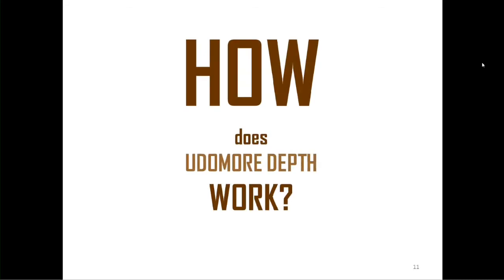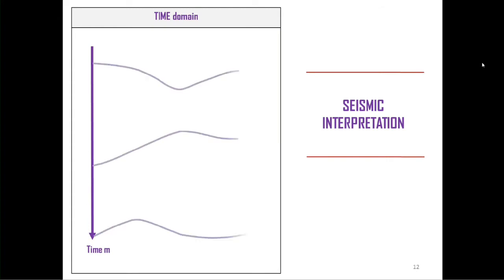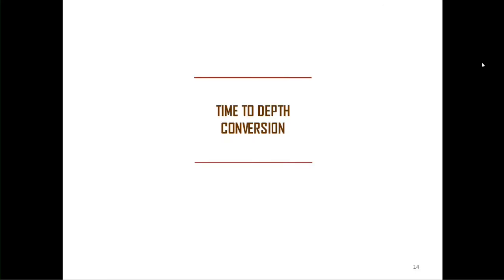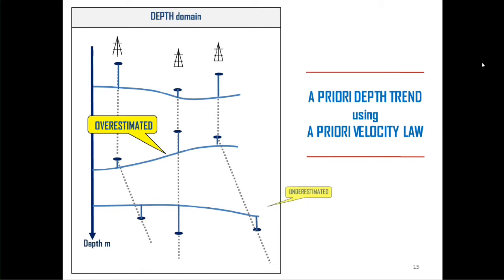How does UdomoDepth work? Let's see. We have seismic time interpretations in time, well depth markers, and more often we perform time to depth conversion. Unfortunately, using a priori depth trend, which is using a priori velocity law, we have mismatches with the well depth markers. Our trend is either overestimated or underestimated, and we need to optimize these velocity parameters.